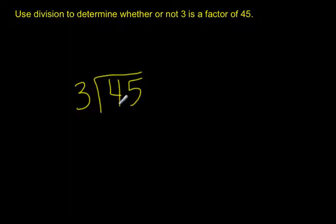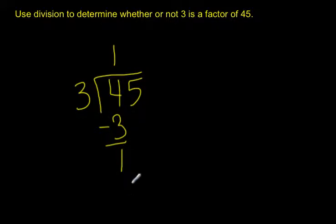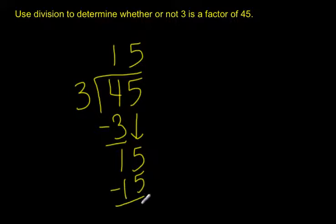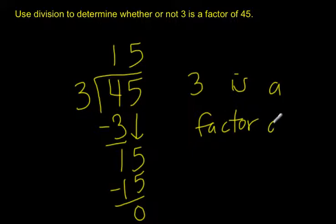In the tens place, I have 4 tens and 3 groups. I can share 4 tens with 3 groups — each group gets 1. 1 times 3 is 3, so I take away 3 tens. 4 tens minus 3 tens is 1 ten. Bring down my 5 ones and regroup — now I have 15 ones. 15 divided by 3 is 5; each group gets 5 ones. 5 times 3 is 15, and I don't have a remainder. I got all the way to 0. Because I divided and got 0, yes, 3 is a factor of 45. Just do division and see if you get to 0 with no remainder.